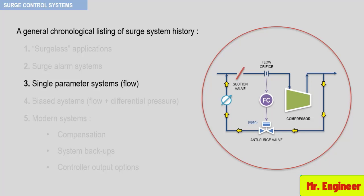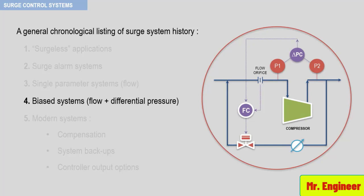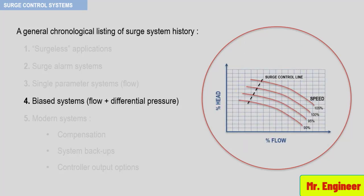The next system shown here is the standard two-parameter or biased system that has been employed almost exclusively in the industry over the past years. This system, as you can see here, consists of flow measurement and differential pressure measurement across the compressor and results in a surge control line that roughly parallels the actual surge line of the compressor. It allows operation across a wider range than the single parameter system and, if properly sized, can perfectly protect the compressor.